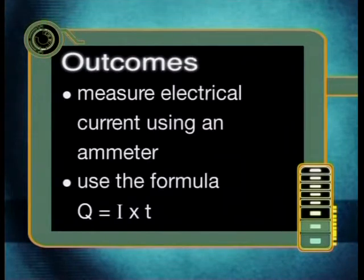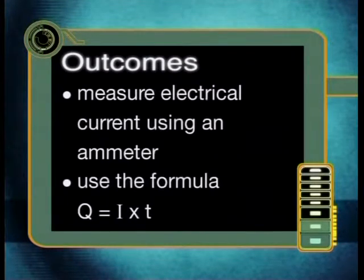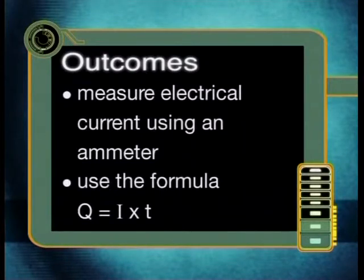By the end of this lesson, you should be able to measure an electric current using an ammeter, and use the formula Q is equal to I times T.